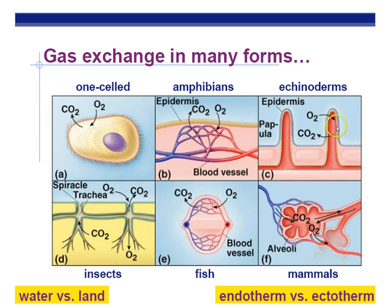Echinoderms (starfish) breathe through little bumps called papulae — you don't have to know that. Insects breathe through holes in their sides called spiracles, not through their mouths — they only eat through their mouths. Fish have gills with lots of little blood vessels for gas exchange. Mammals have tiny sacs in our lungs called alveoli for gas exchange from high to low concentration.